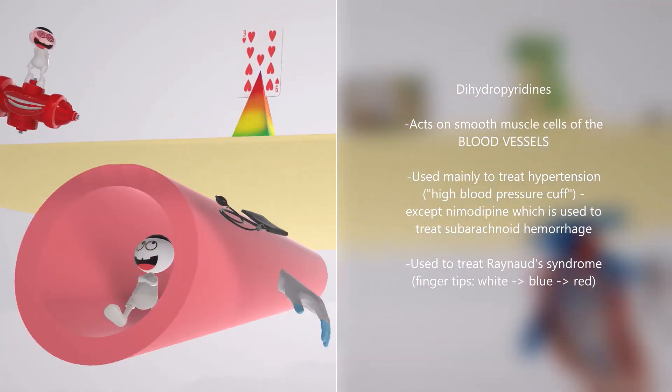And then we see a hand with blue fingertips — the fingertips turn white, blue, and then red, especially when it's cold outside or a person is feeling stressed. This hand with the blue fingertips helps us remember that the dihydropyridines are used to treat Raynaud's syndrome.